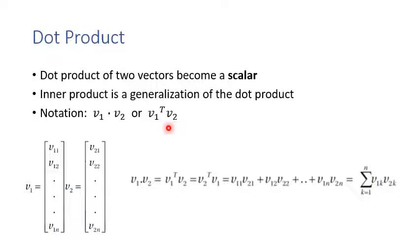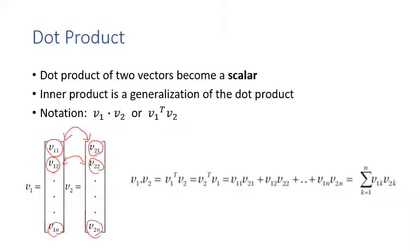The notation uses a dot: v1 · v2, or equivalently v1^T × v2. The dot product is calculated by multiplying corresponding elements one by one: element v1[1]×v2[1], then v1[2]×v2[2], and so on until v1[n]×v2[n]. Note that v1 and v2 must have the same number of elements.